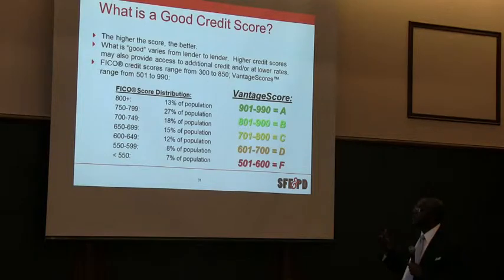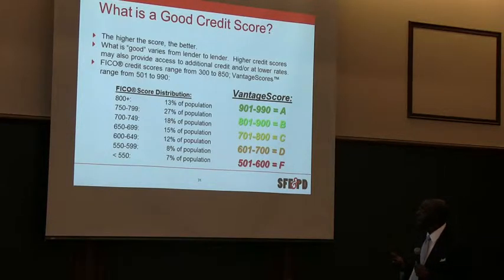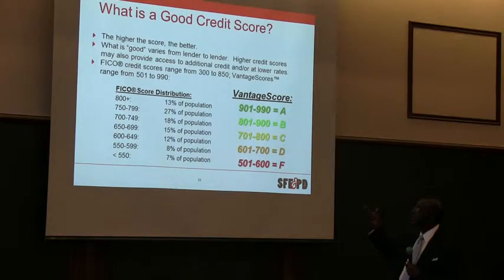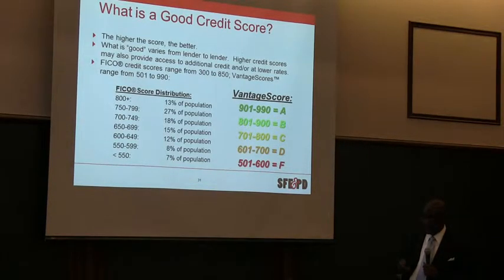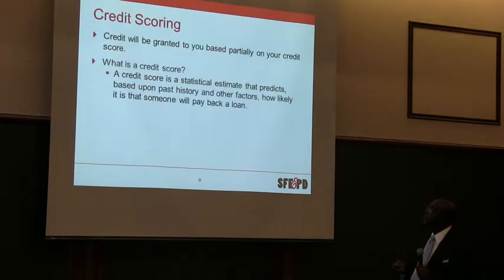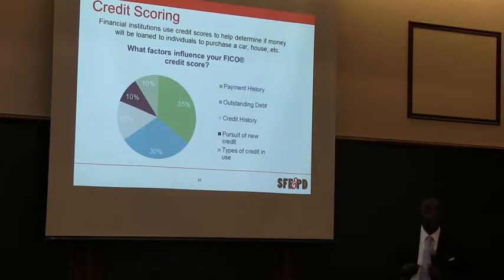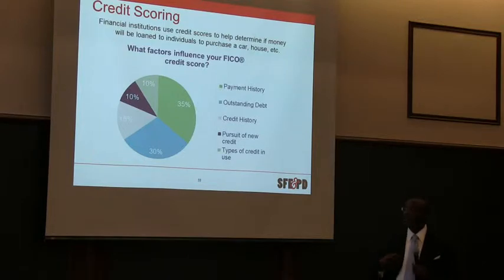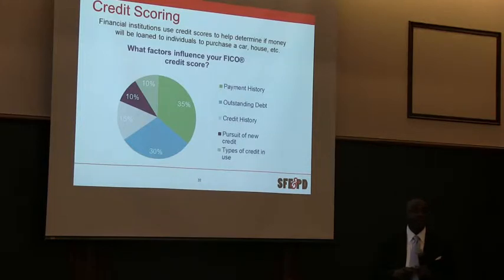They also have a vantage score, put together by all three credit reporting agencies — Equifax, TransUnion, and Experian. The dynamics are the same: 901 to 990 is an A, 801 to 900 is a B, and 501 to 600 is an F. On this scale, you want a credit score of 801 and above. Now let's look at the factors, because you can control your own credit score — it's tied to you like your DNA. The biggest factor is your payment history: 35% of your credit score is based on whether you pay consistently as agreed. If you can't pay more than the minimum, pay the minimum.